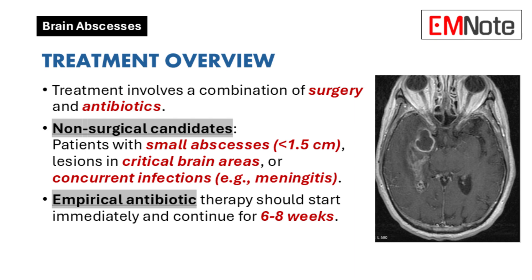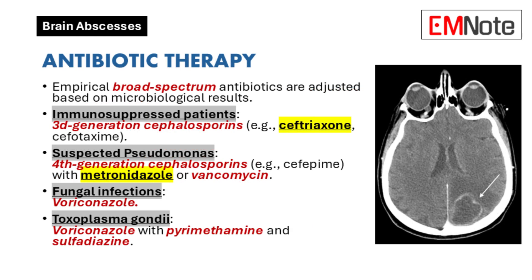Empirical antibiotic therapy should be initiated as soon as possible. The choice of antibiotic depends on factors such as the pharmacokinetic and pharmacodynamic properties of the drug, prior treatments, routes of administration, predisposing conditions, the suspected cause of the abscess, and the microorganism involved. Broad-spectrum antibiotics are typically used for 6 to 8 weeks, with adjustments made based on microbiological findings. Immunosuppressed patients often receive third-generation cephalosporins such as ceftriaxone or cefotaxime. If Pseudomonas infection is suspected, fourth-generation cephalosporins like cefepime are used, often in combination with metronidazole or vancomycin. For fungal infections, particularly those caused by Aspergillus, voriconazole is recommended.